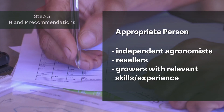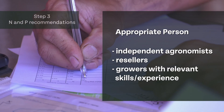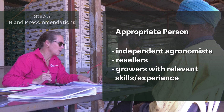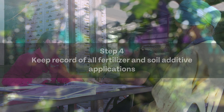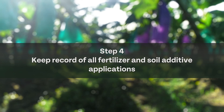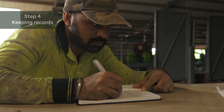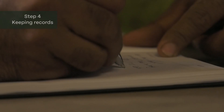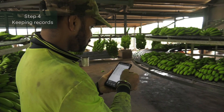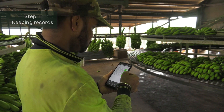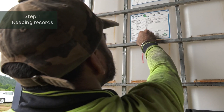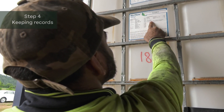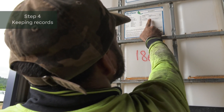Growers must also keep records of the recommendations made by an appropriate person such as an agronomist or reseller. It is an industry, FreshCare and legislative requirement for records to be kept regarding fertiliser applications, in particular nitrogen and phosphorus, including manure and mill mud or mill ash.